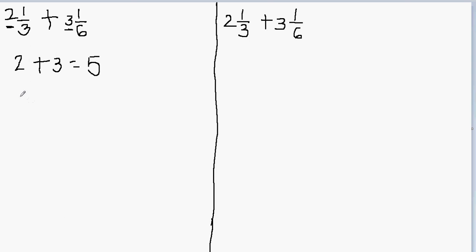Now we have to add the fractional part. For the fractional part, we have 1 over 3 plus 1 over 6. What you notice here is we have different denominators. Whenever you have different denominators, you have to make the denominators equal — then only you can add the fractions. So what do I multiply in this fraction to make the denominator equal to 6? I can multiply this fraction by 2 over 2.